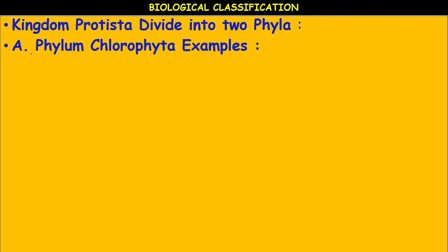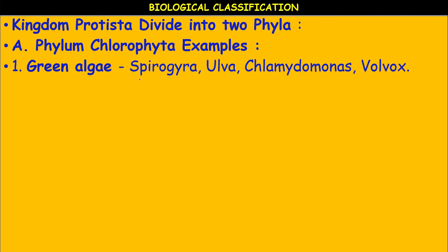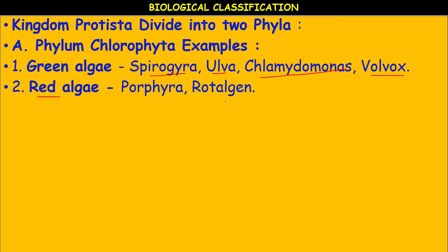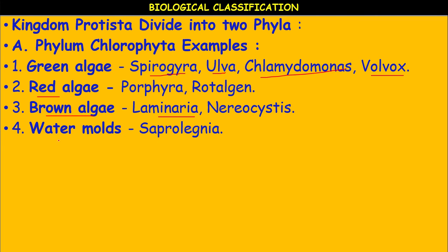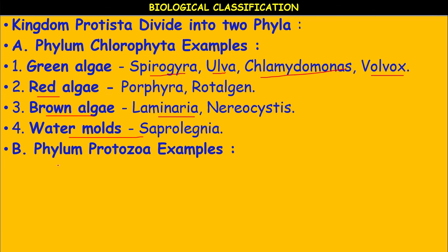Kingdom Protista is divided into two phyla: Phylum Chlorophyta and Phylum Protozoa. Chlorophyta includes green algae such as Spirogyra, Ulva, Chlamydomonas, and Volvox — Spirogyra is spiral-shaped. Red algae examples include Porphyra and Rhodulgen. Brown algae examples include Laminaria and Nereocystis. Water molds include Saprolegnia.